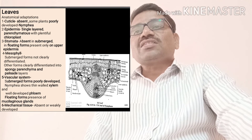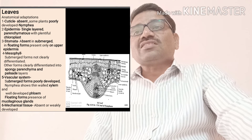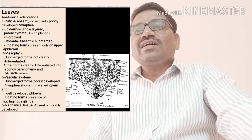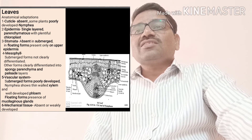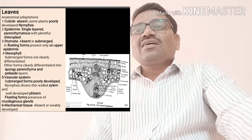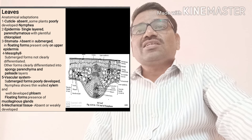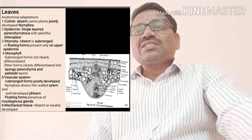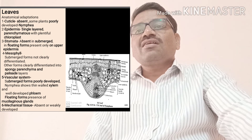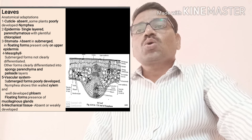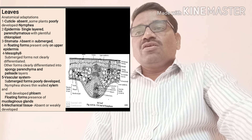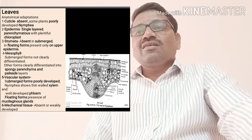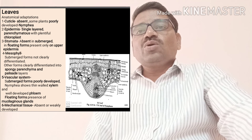In leaves of such hydrophytes, some anatomical adaptations are seen. When we take the transverse section of the leaf of Nymphaea, the cuticle is absent, but in some plants — particularly Nymphaea — it is poorly developed. The epidermis is single-layered and parenchymatous, with plentiful chloroplasts. Stomata are absent in submerged forms, but in floating forms they are present only on the upper epidermis.